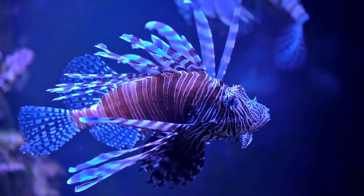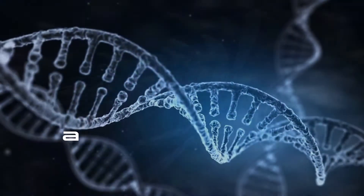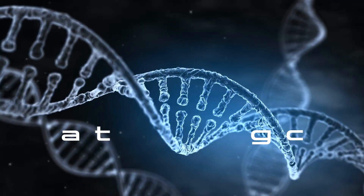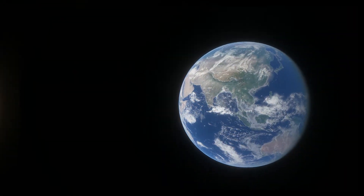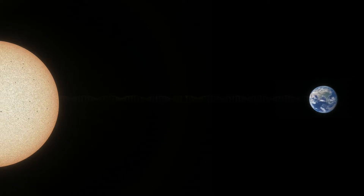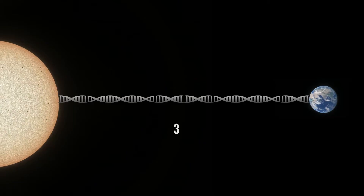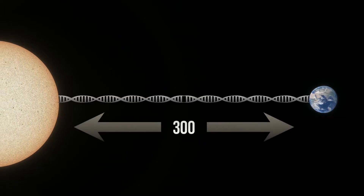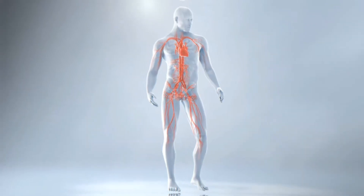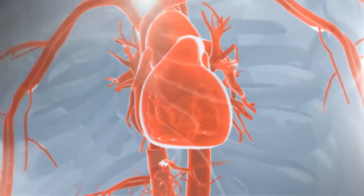All life on Earth is encoded in the four letters of DNA: ATGC. If you stretched out the entire DNA in a human body, it would reach to the sun and back more than 300 times. Virtually every cell in your body contains DNA that makes you, you.